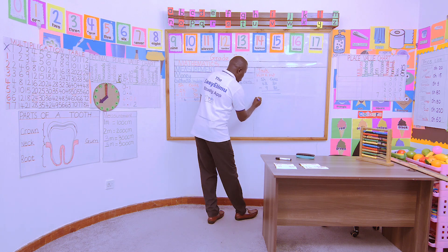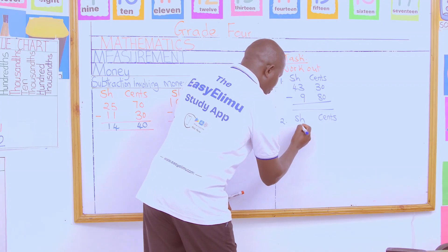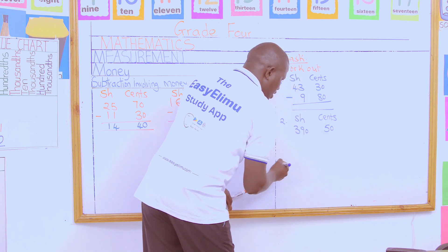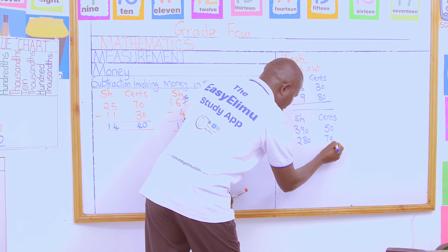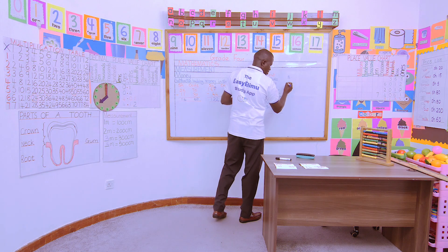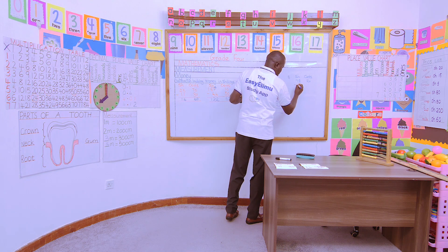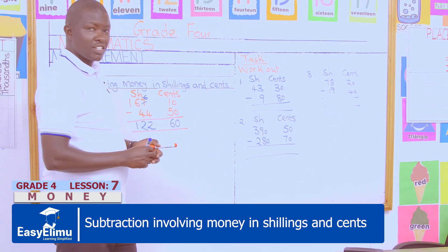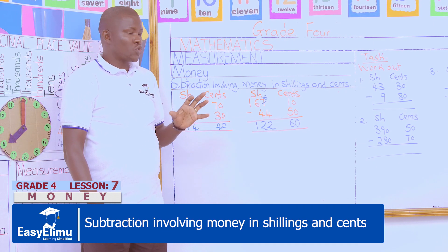Number two: in our subtraction of shillings and cents, we have 309 shillings and 50 cents take away 280 shillings and 70 cents. The last task, number three: 78 shillings and 20 cents take away 19 shillings and 40 cents. Remember: borrowing, regrouping, and one shilling is equivalent to 100 cents.